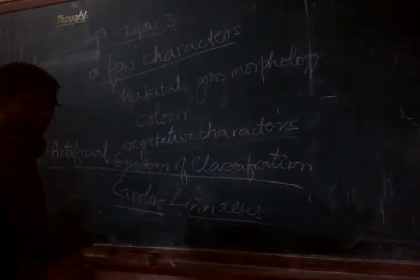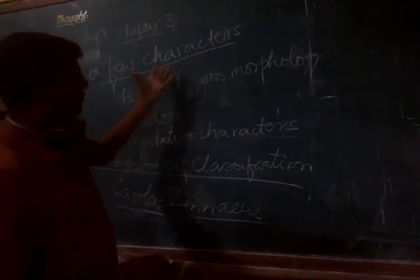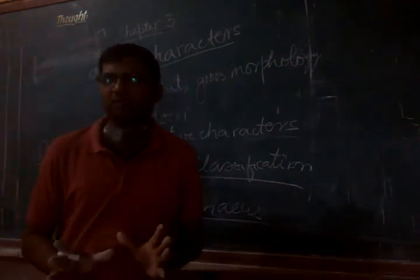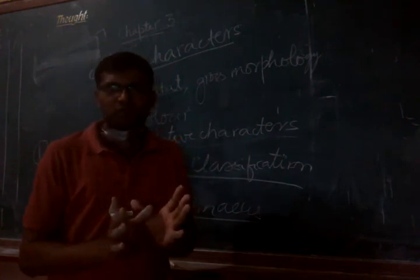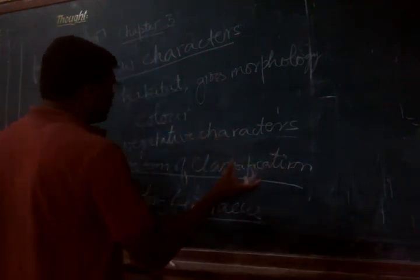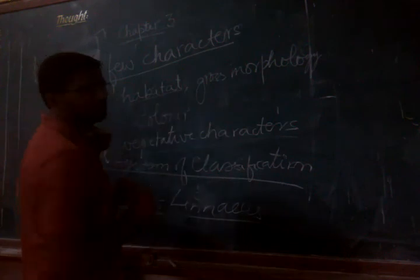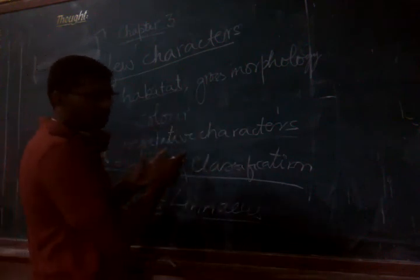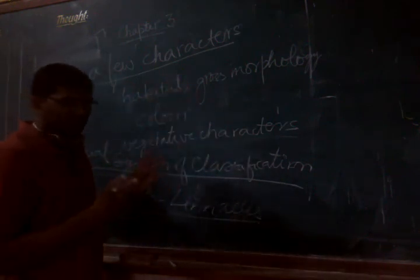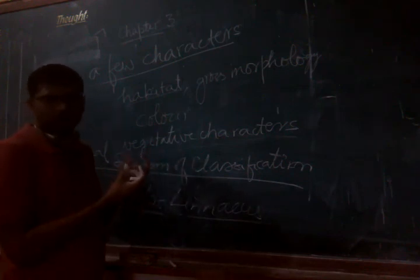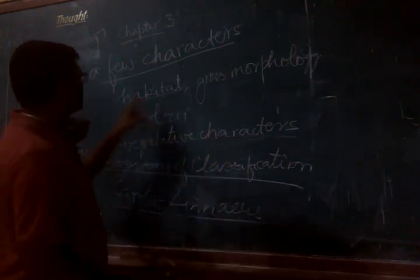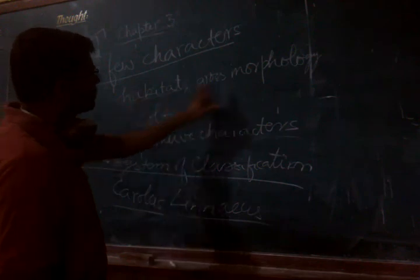Now, what was found is that if you use only a few characters, there are so many disadvantages. Many times you place many unrelated organisms into the same category together, and many closely related organisms may be placed far apart, because you are considering very few characters only.